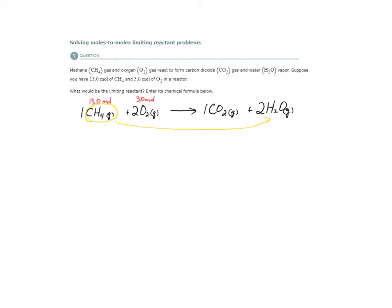And then we're going to do the same thing with oxygen. If I have plenty of methane, how much water can I make from 3 moles of oxygen? We're going to also convert to water. And the substance that's going to give me the least amount of water is my limiting reactant. So let's do it. Let's see what we get.